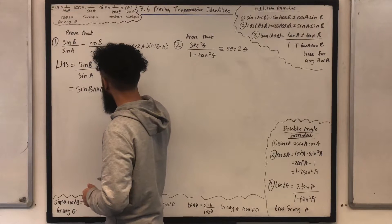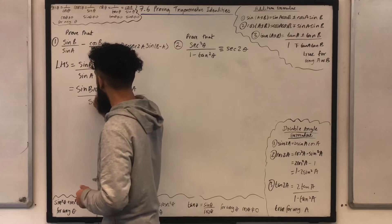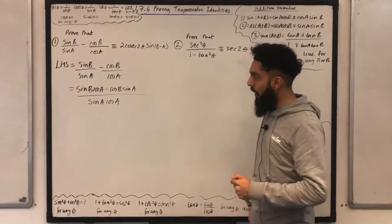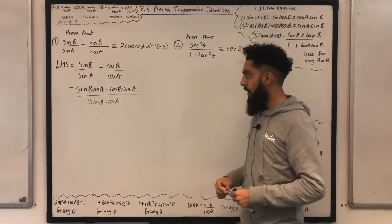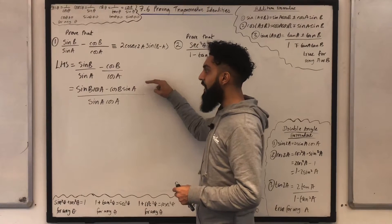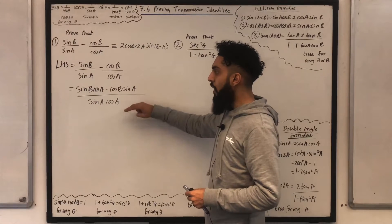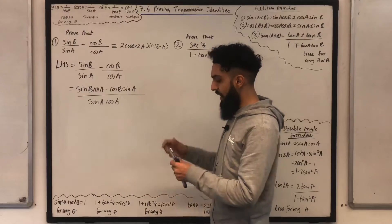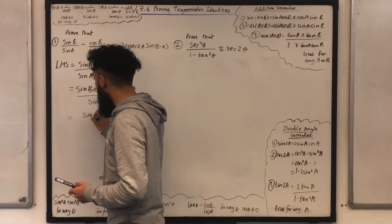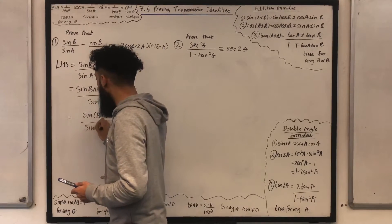Now, how can I simplify this further? In the numerator, I can see the sin addition formula expanded, and in the denominator, I can see the double-angle formula for sin. So what I'm going to do first of all is simplify the numerator. If I simplify the numerator, I obtain sin in bracket B minus A, all over sin A cos A.